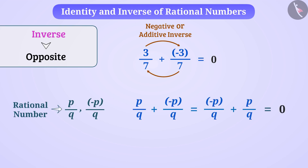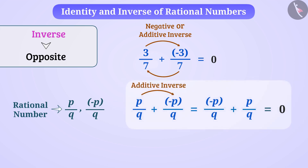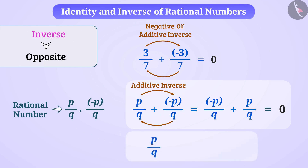Rational number (-p/q) is the additive inverse of rational number p/q. Similarly, rational number p/q is the additive inverse of (-p/q). The additive inverse of a rational number is obtained by multiplying by -1, meaning by changing the sign of the rational number.